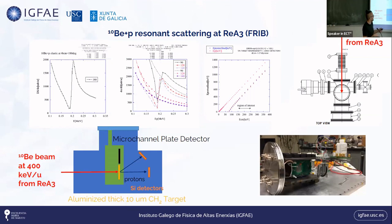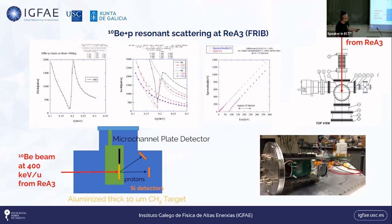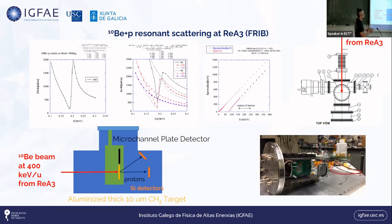For this, we used a very simple setup because such a narrow resonance would be very difficult to measure with a TPC. We simply placed a silicon detector in front of a CH₂ target. The challenging point was having a Beryllium-10 beam of the required energy with small energy spread. We took material from the Paul Scherrer Institute in Switzerland and created a re-accelerated beam with very good properties. The beam was stopped inside the CH₂ target and we measured scattered protons.